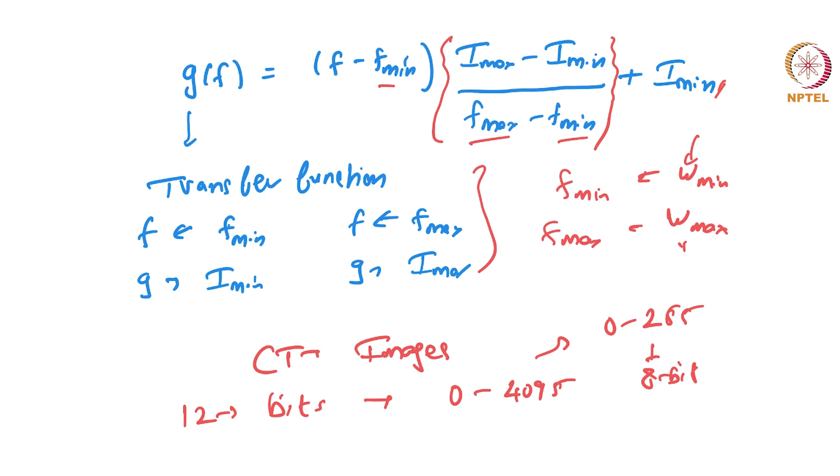Again there are variations of this. So this is the simplest version and often done. This is called the window and level, often done on CT images. This is one of the most simplest contrast enhancements and you will end up doing this often.